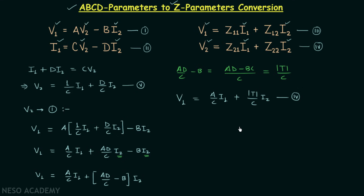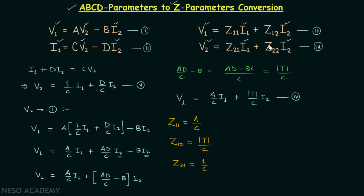Comparing equation 3 with equation 6, we find Z11 = A/C. Comparing equation 4 with equation 5, we find Z12 = det[T]/C, Z21 = 1/C, and Z22 = D/C.